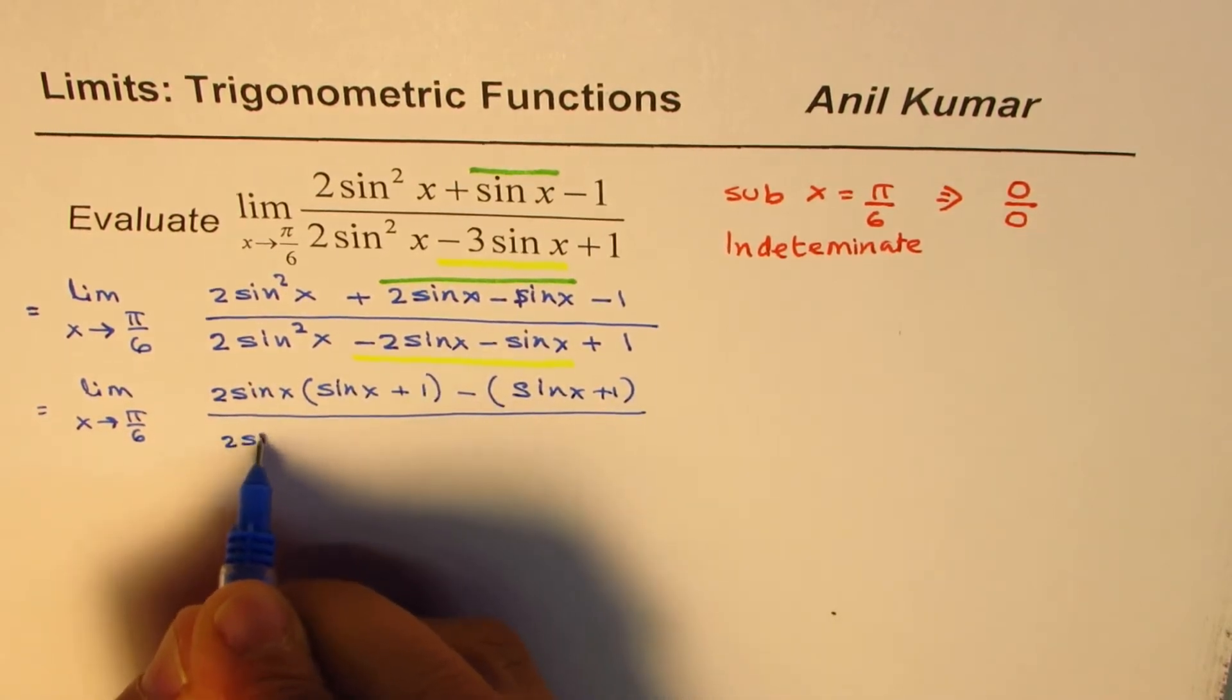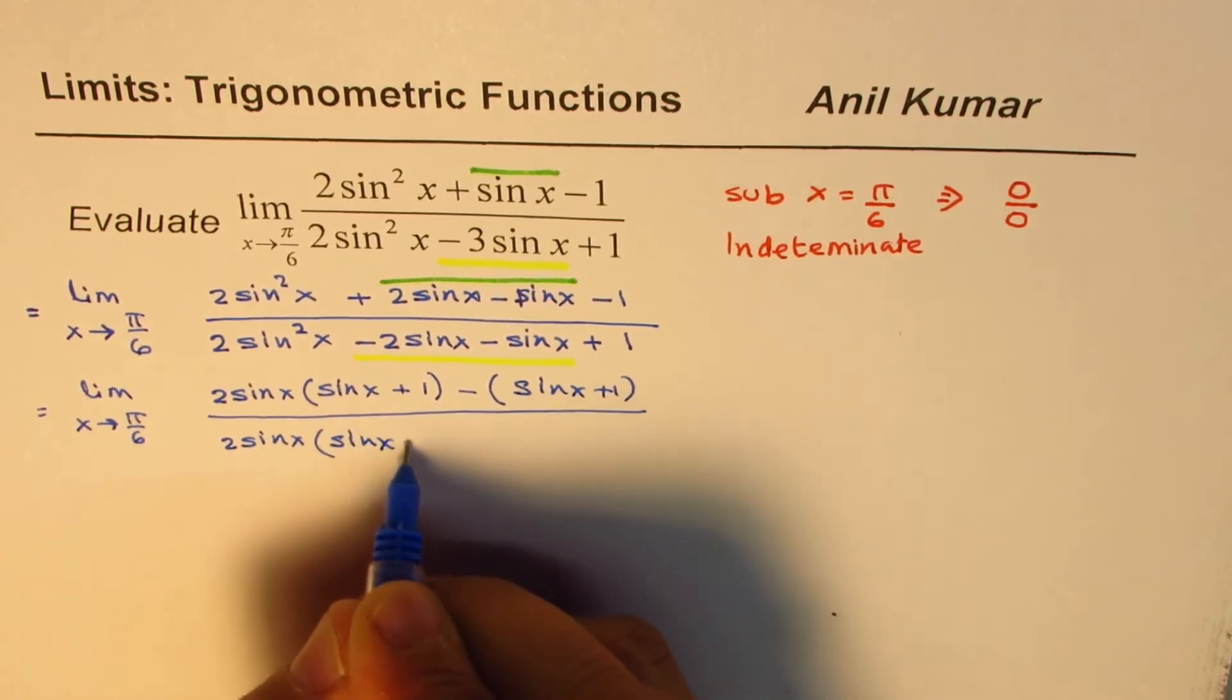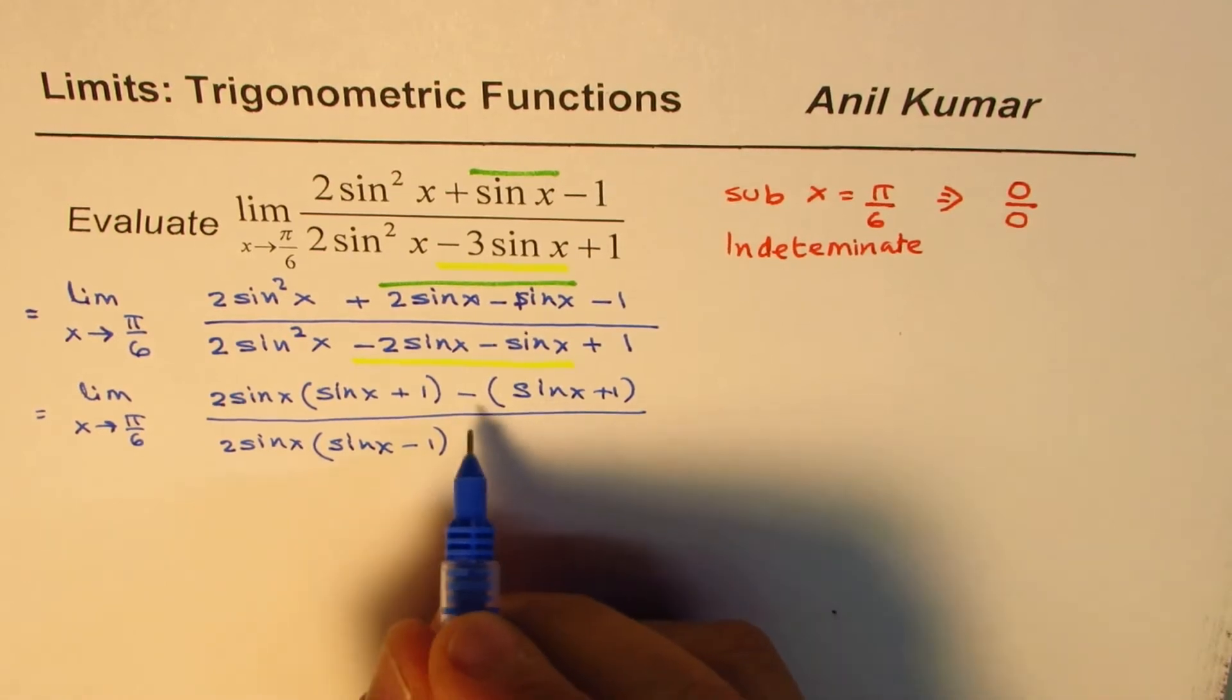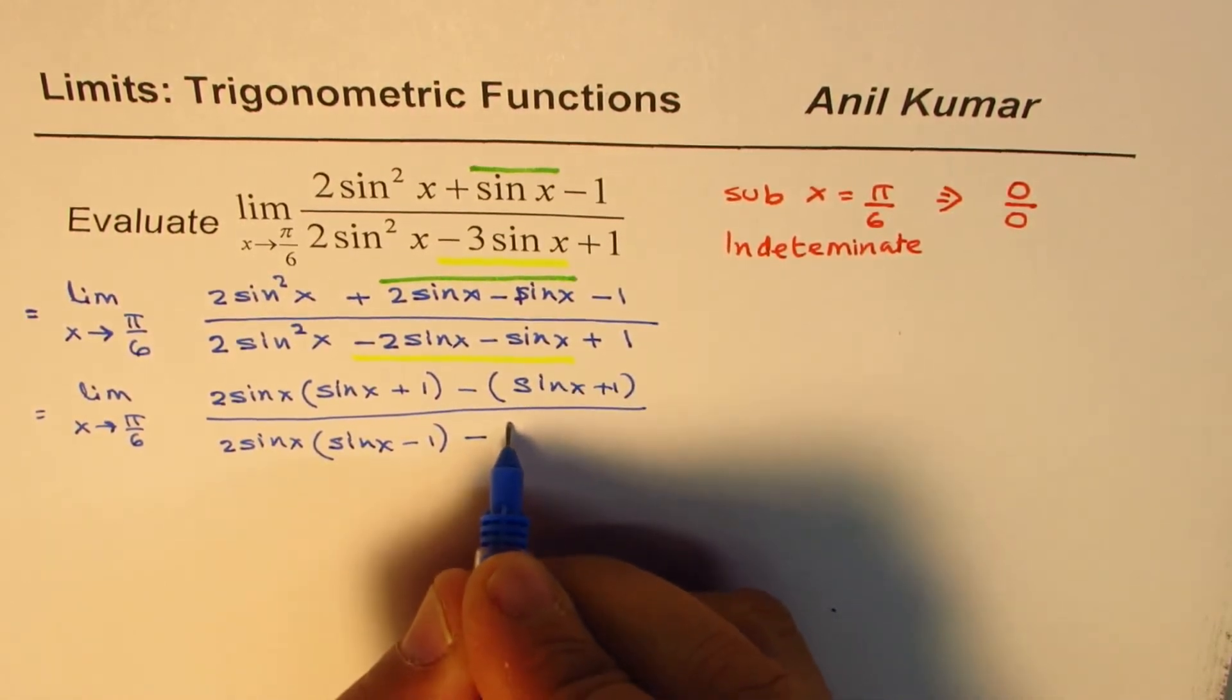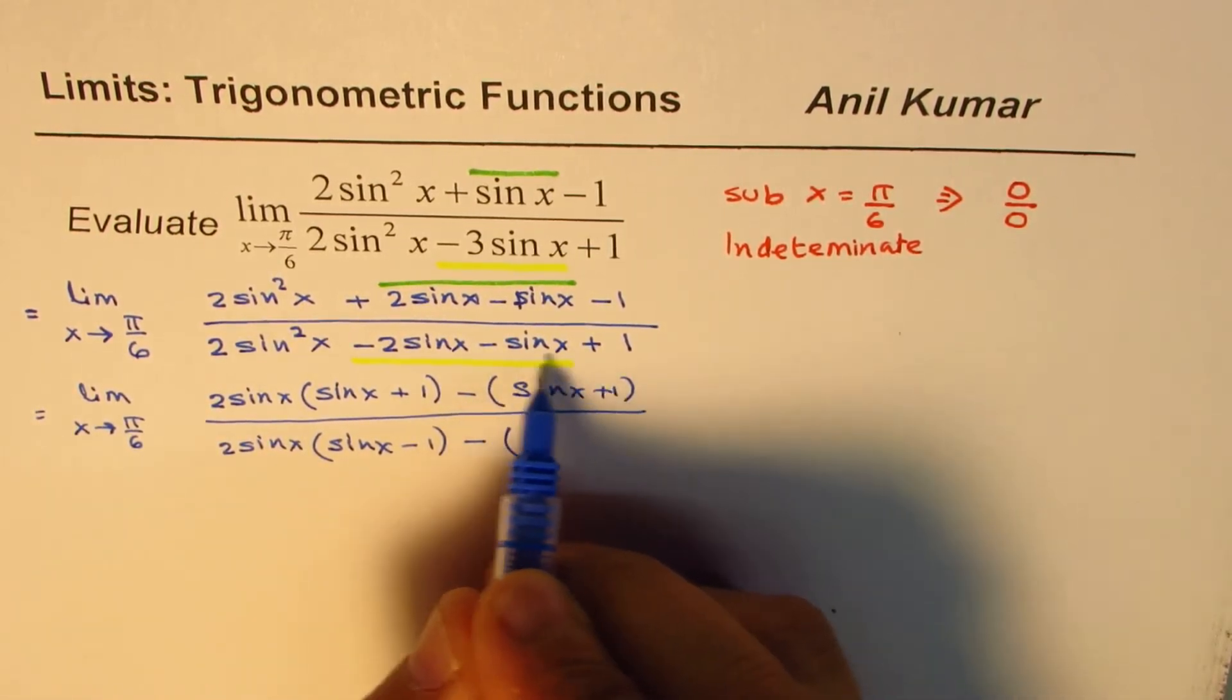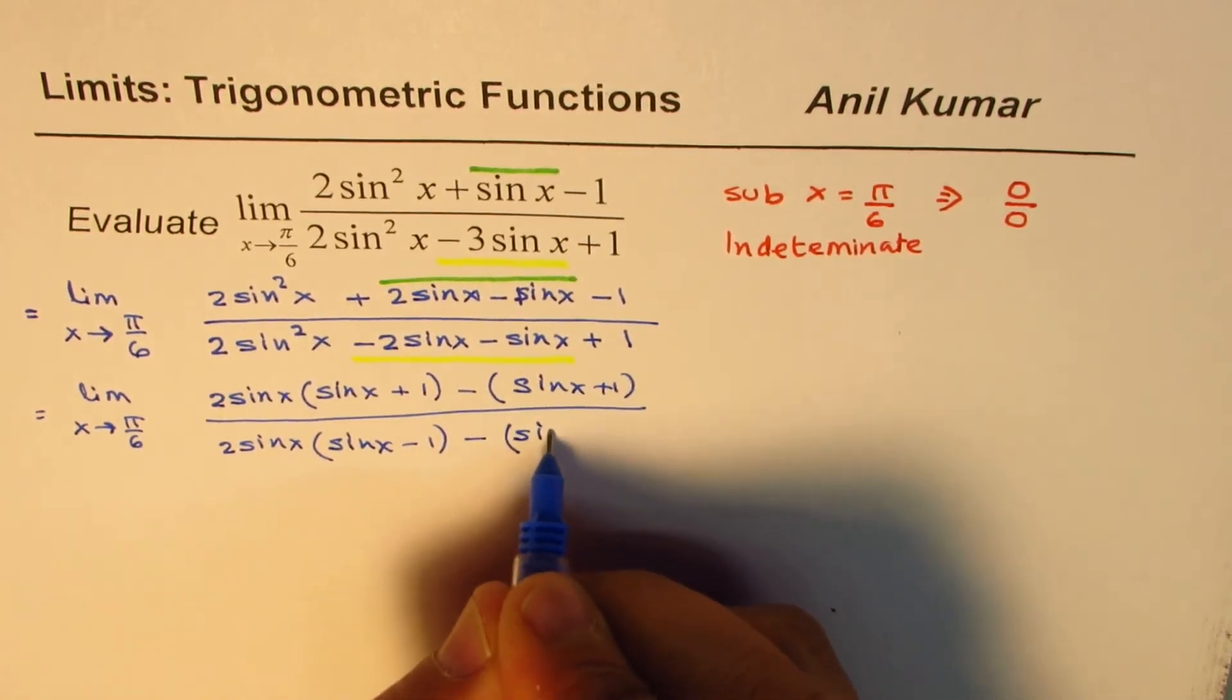Here 2sinx is common. So we can write this as sinx minus 1. Now here we have minus common. So we'll get minus. And I'm sorry, this bracket is not there. I mean, we are in the denominator. Okay, right. So when you take minus common, we have sinx minus 1.